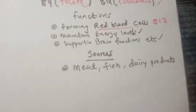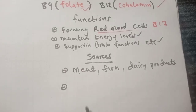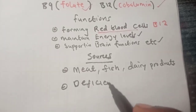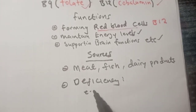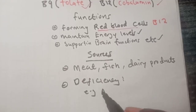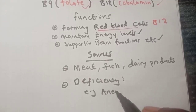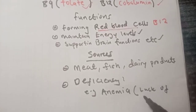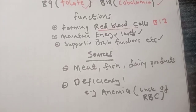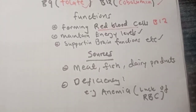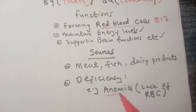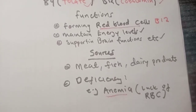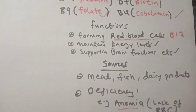Sources of vitamin B include meat, fish, and dairy products. Deficiency of these vitamins results in a number of diseases — notably anemia, which is where a person lacks red blood cells. B12 and folate deficiency in particular can cause anemia.